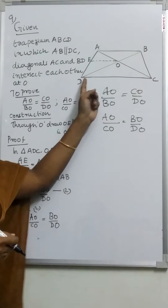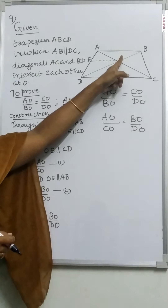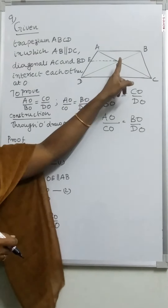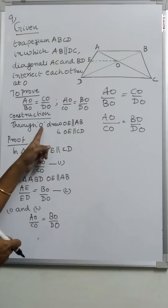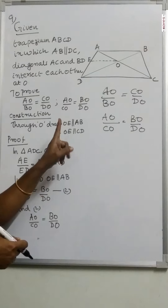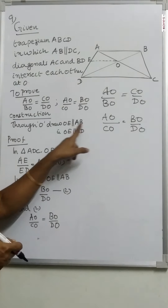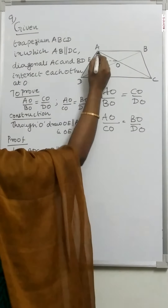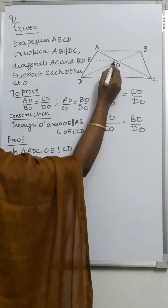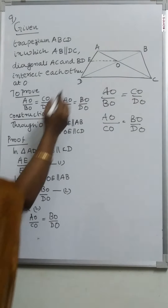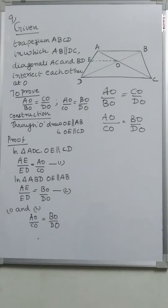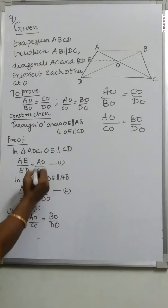Because AB is parallel to CD, OE is parallel to AB means OE is also parallel to CD. In triangle ADC, OE is parallel to CD. Therefore, AE by ED is equal to AO by CO by the Basic Proportionality Theorem.